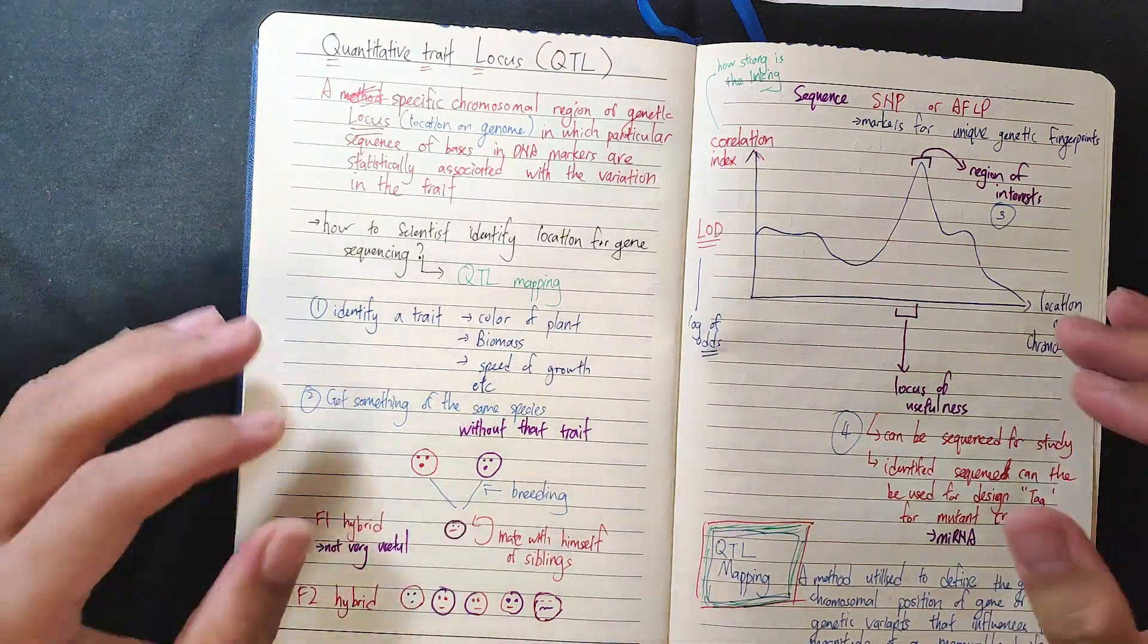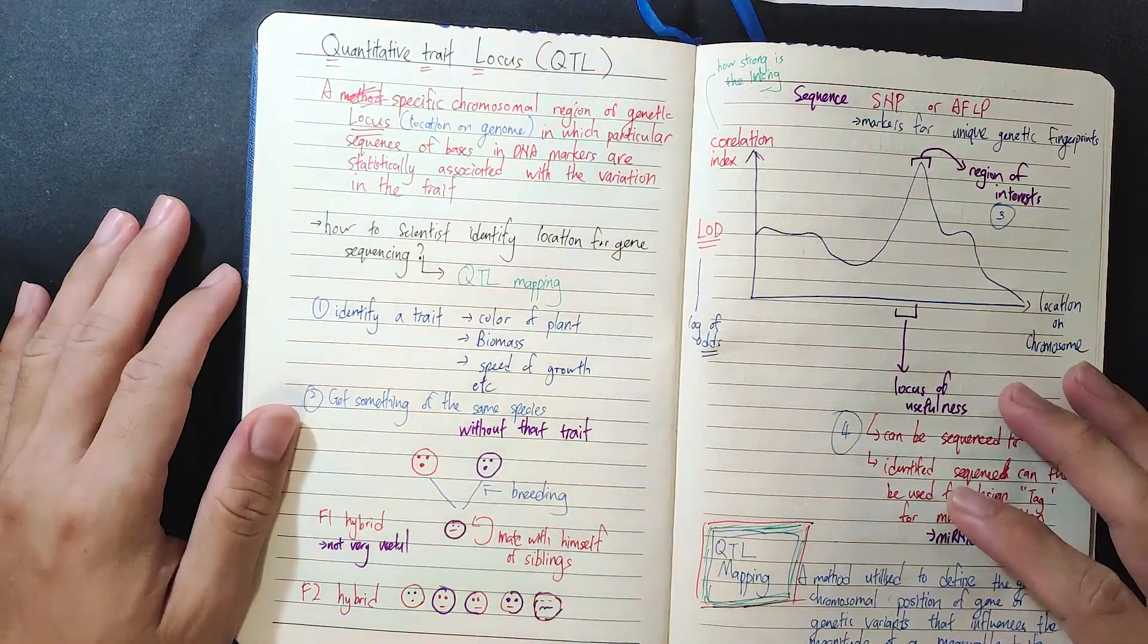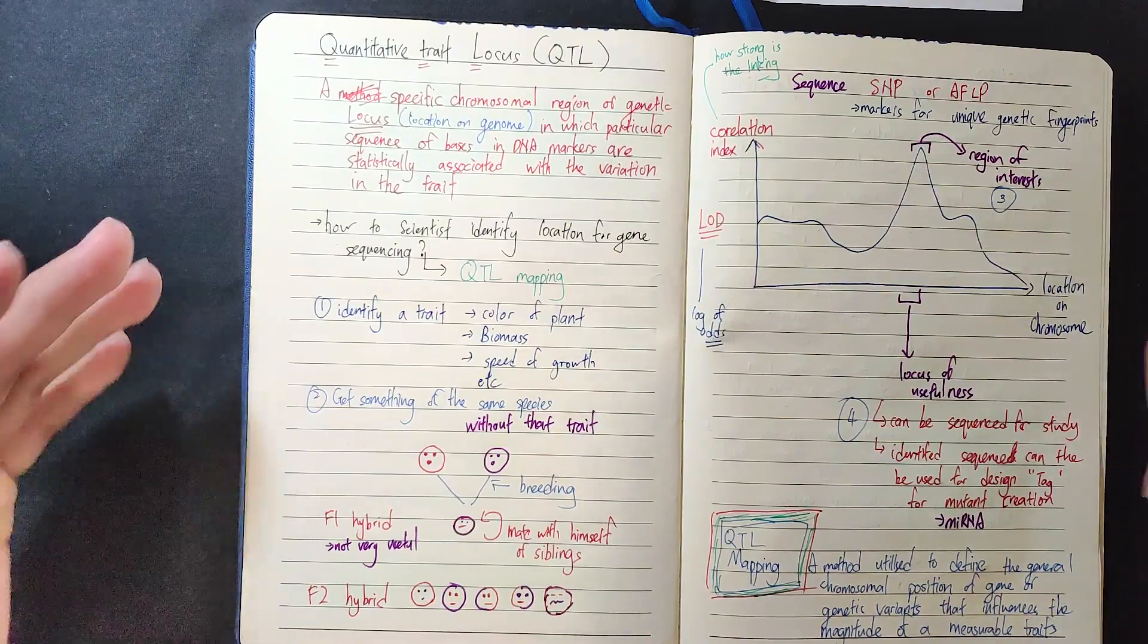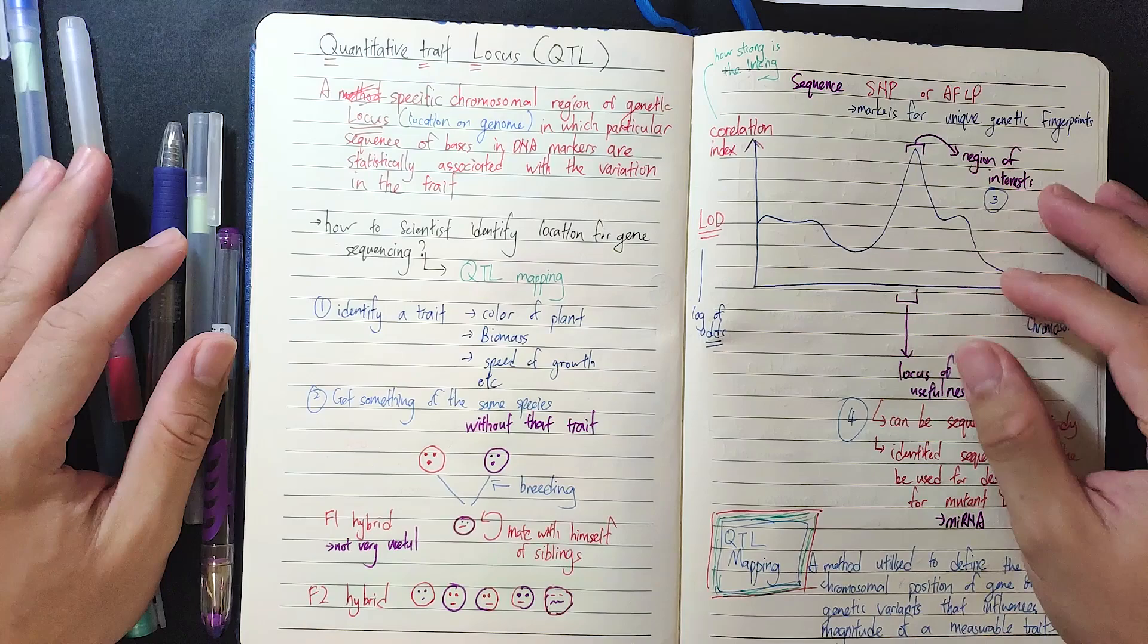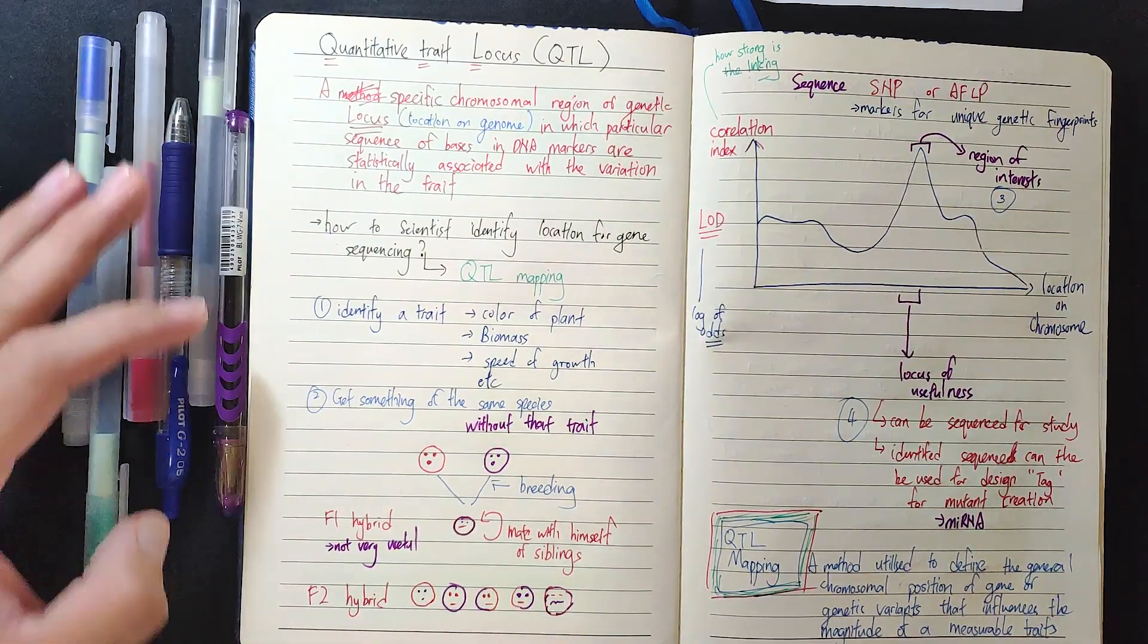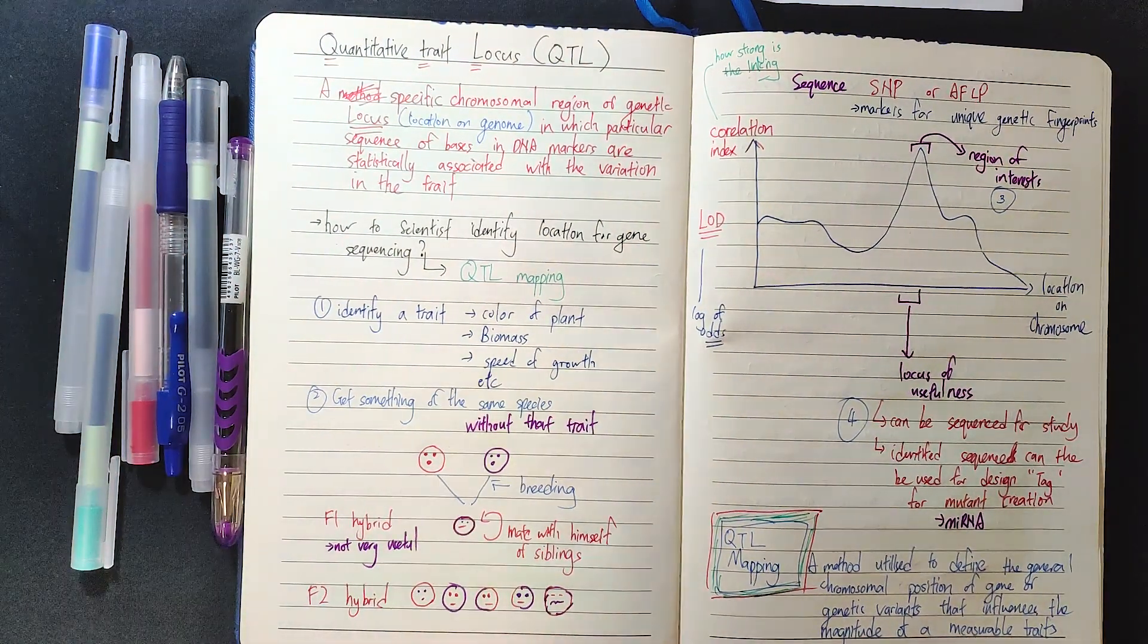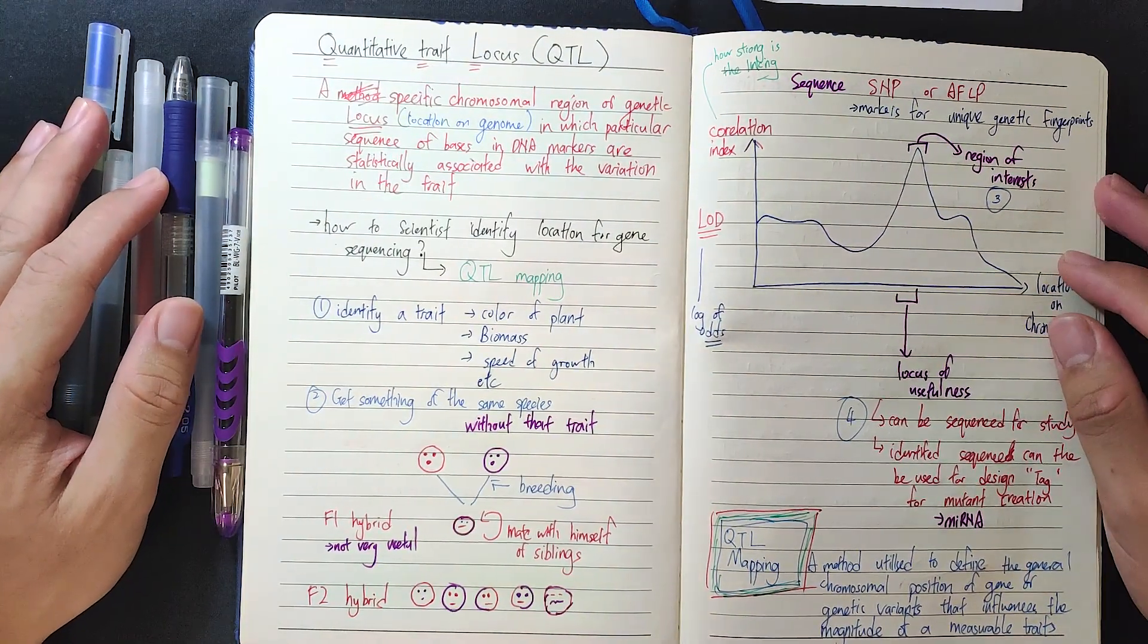Good morning everyone. Today I'm going to talk about quantitative trait locus, or most commonly known as QTL. I think that's the first thing you actually heard about when you learn about genetics, plants, agriculture, and breeding programs. The first thing you're going to hear about is quantitative trait locus, which is the full name for QTL. It's something I never understood until I actually started making this video.